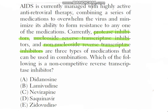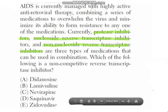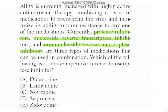AIDS is currently managed with highly active antiretroviral therapy, combining a series of medications to overwhelm the virus and minimize its ability to form resistance to any type of medication. Currently, protease inhibitors, nucleoside reverse transcriptase inhibitors, and non-nucleoside reverse transcriptase inhibitors are three types of medications used in combination. Which of the following is a non-competitive reverse transcriptase inhibitor: darunavir, lamivudine, nevirapine, saquinavir, or zidovudine?